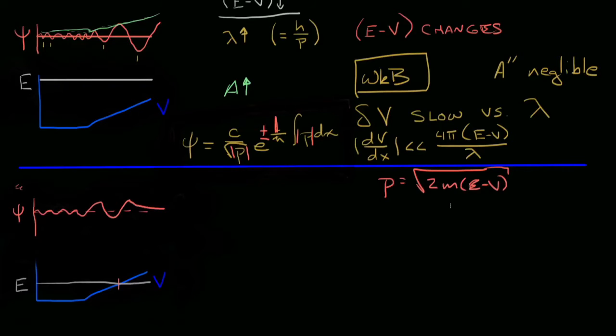The one thing I do need to point out is that we haven't looked at what happens when e equals v. You can imagine e equals v, the momentum going to zero, and then the momentum being zero in the denominator of our wave equation and all sorts of hairy things happening.